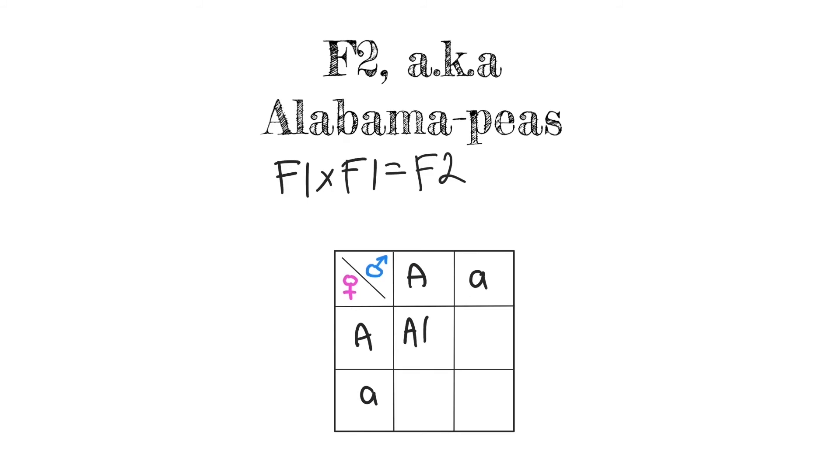So now we cross them and we get this first kid, the second, the third, and the fourth one.